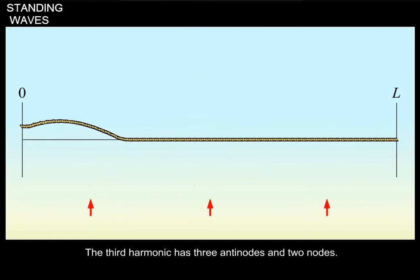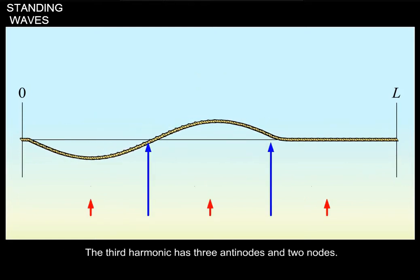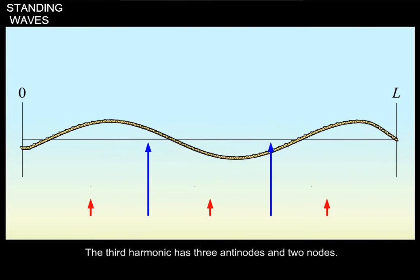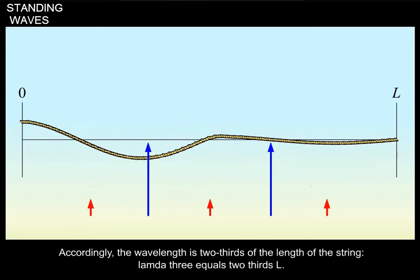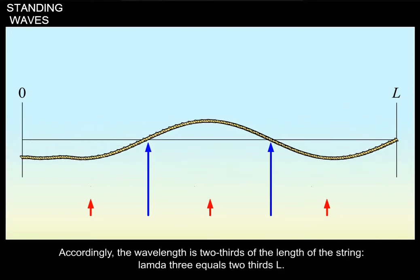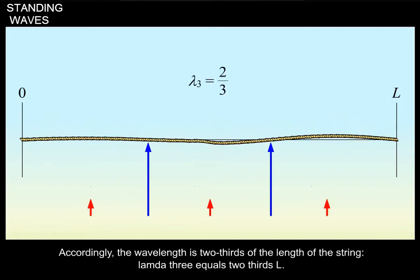The third harmonic has three antinodes and two nodes. Accordingly, the wavelength is two-thirds of the length of the string, which is written lambda 3 equals two-thirds L.